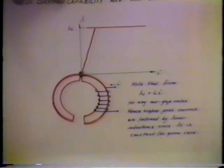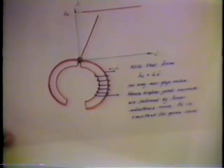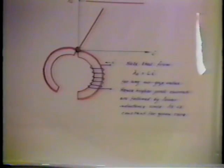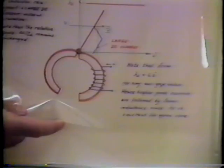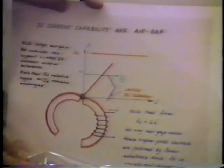And therefore, at this point, if we still further increase the gap and reduce inductance, we can pass much larger current, much larger DC current, and still not saturate the core.